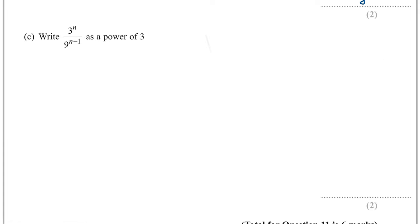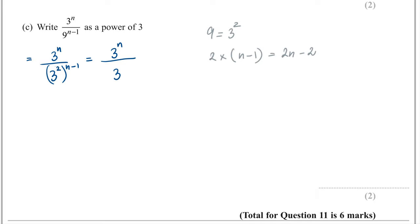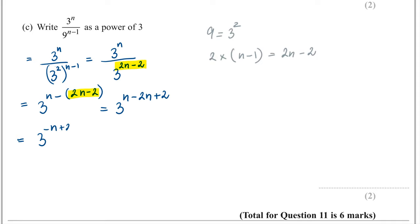Part C. Write 3 to the power of n over 9 to the power of n minus 1 as a power of 3. Replace 9 with 3 squared: this gives 3 to the power of n over 3 to the power of 2(n minus 1). Expanding the denominator's power gives 3 to the power of 2n minus 2. Dividing means subtracting powers: n minus (2n minus 2) simplifies to minus n plus 2. The result is 3 to the power of 2 minus n.